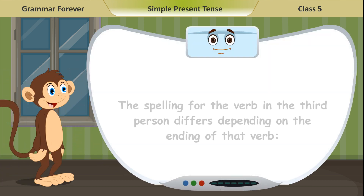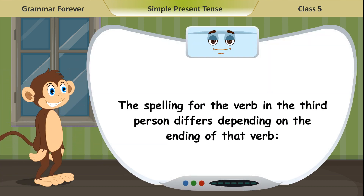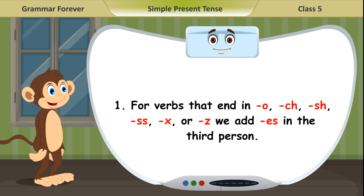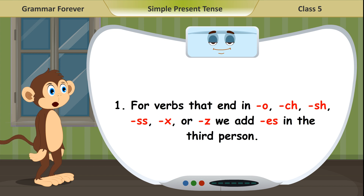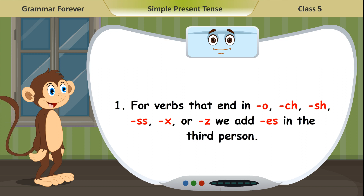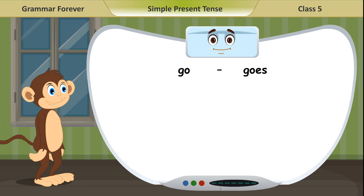The spelling for the verb in the third person differs depending on the ending of that verb. For verbs that end in O, CH, SH, SS, X, or Z, we add ES in the third person. Example: Go — goes.